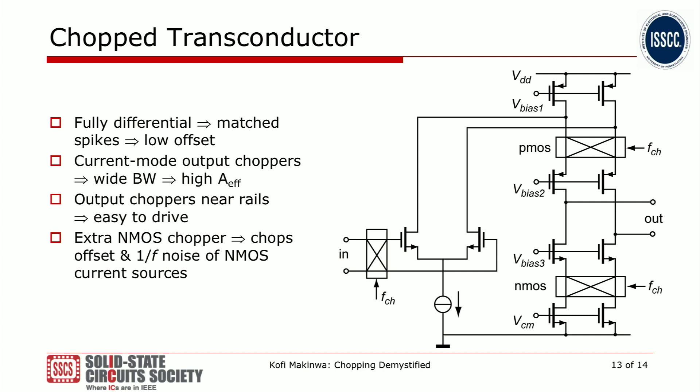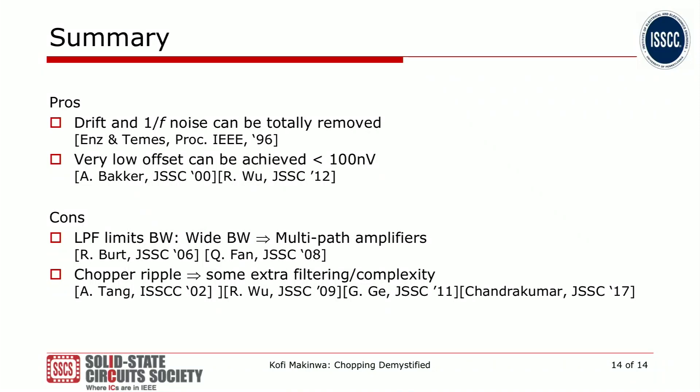That's basically all I want to tell you about chopper amplifiers today. In summary, chopping — with just four or eight switches — can turn you from zero to hero. But it's not a free lunch. The pros: with chopping you can completely eliminate drift and 1/f noise, and offset can be made very, very low. In fact, people have reported offsets in the order of 100 nV. There are some cons though: there's a fundamental low-pass filtering associated with chopping which limits bandwidth. But it turns out that by using more advanced topologies, we can simultaneously obtain low offset and wide bandwidth.